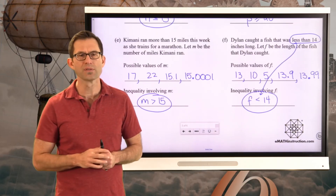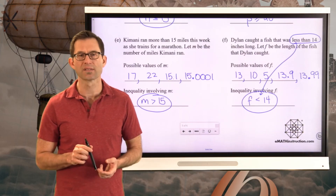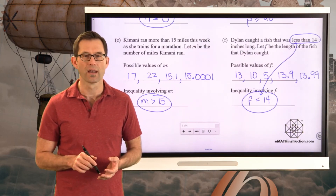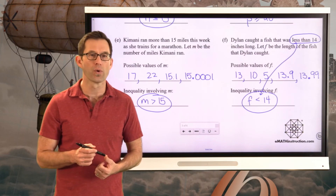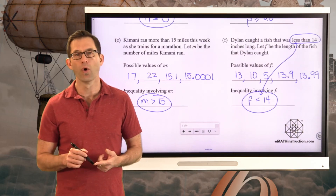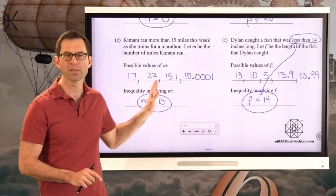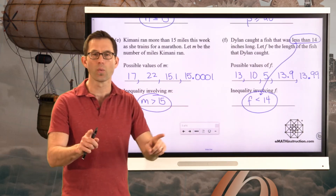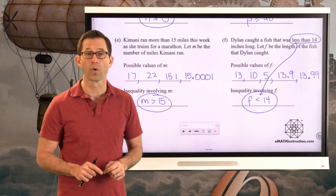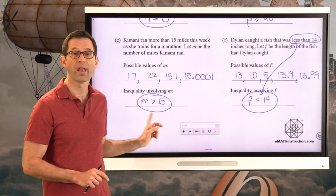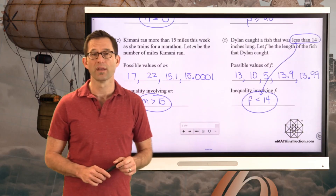Generally speaking, if we read through these carefully and pick out important phrases like 'at least,' 'at most,' 'less than,' 'more than,' 'no fewer than,' 'no more than,' and we think about possible values that could work — and maybe even values that couldn't work — it will help us write down the correct inequality.